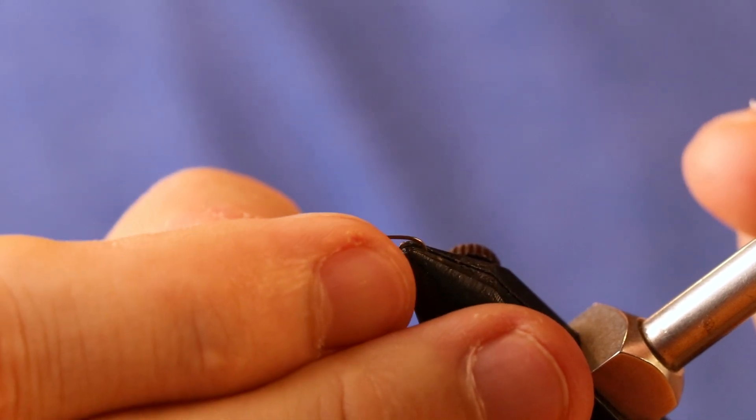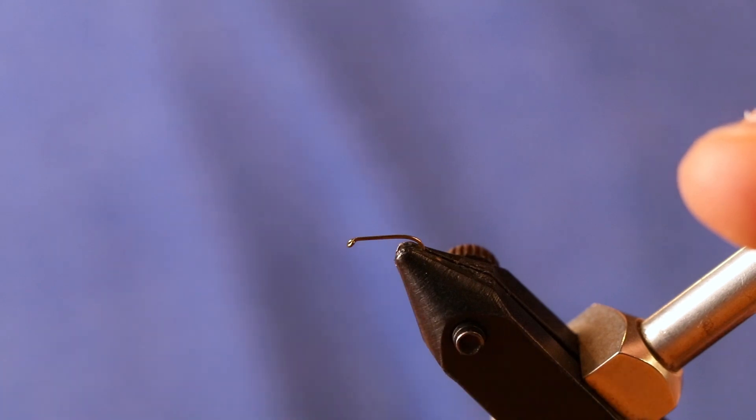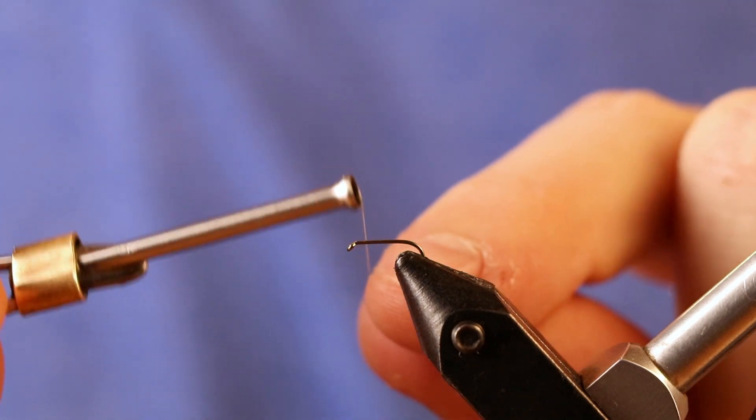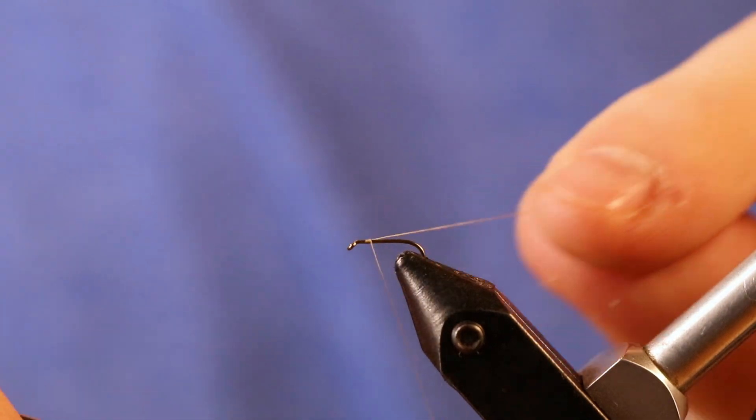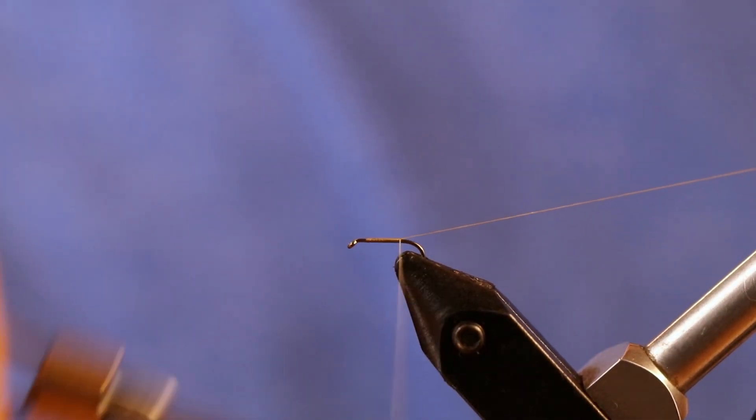I definitely would recommend tying this on a dry fly hook though, because it's meant to be fished as an emerger. I usually fish mine as a nymph, but it works great as an emerger as well. I'm going to start my thread, keeping a little bit of space behind the eyelet, and I'm going to keep my tag end as I work this towards the back.